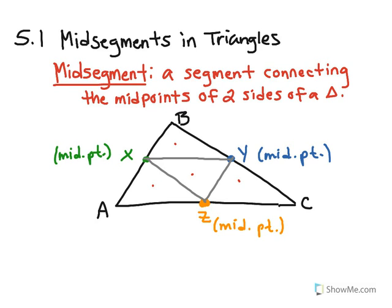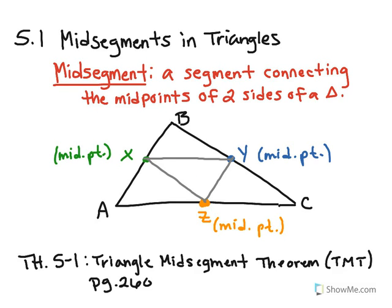And the next thing is we have the theorem in your books. It does have a special name. And so the theorem that we're going to talk about is Theorem 5-1. And it does have a special name called the Triangle Midsegment Theorem, or TMT, if you want to make an acronym. And the exact definition of this theorem is on page 260, but I'm just going to show you what it means. And this would be a great theorem to add to your theorem and postulates pages, so please make sure that you do that.